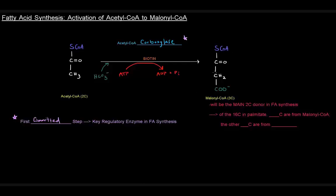Malonyl-CoA is going to be the main two-carbon donor in fatty acid synthesis. What I mean by that is that when we're building a fatty acid, we're continually adding two carbon units at a time, and the molecule donating those two carbons is malonyl-CoA. It's a bit odd, because this is a three-carbon molecule. The reason is that the first condensation reaction actually releases this carbon dioxide, so this third carbon is irrelevant in terms of the product yielded.